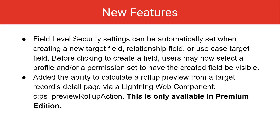Field-level security settings can be automatically set when creating a new target field, relationship field, or use case target field. Before clicking to create a field, users may now select a profile and/or a permission set to have the created field be visible. Finally, we've added the ability to calculate a roll-up preview from a target record's detail page via a Lightning Web Component. This is only available in the Premium Edition.